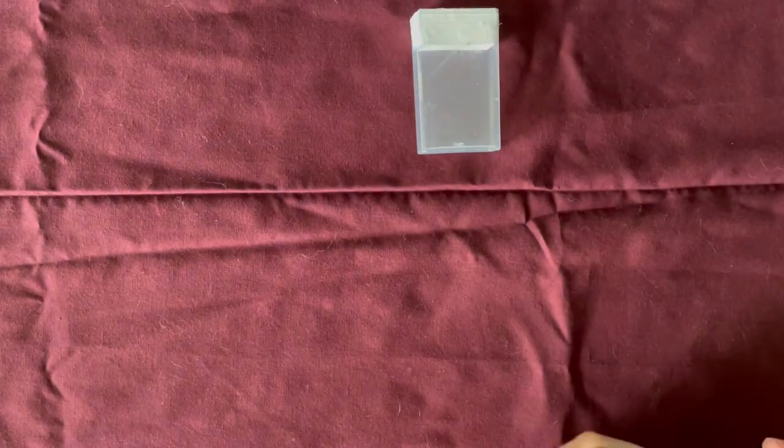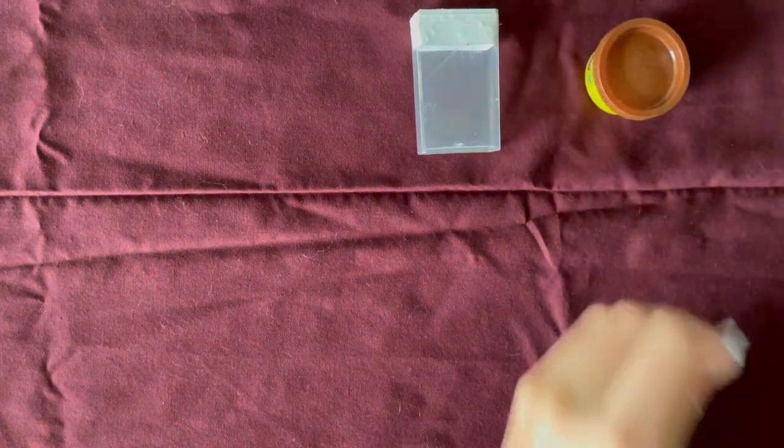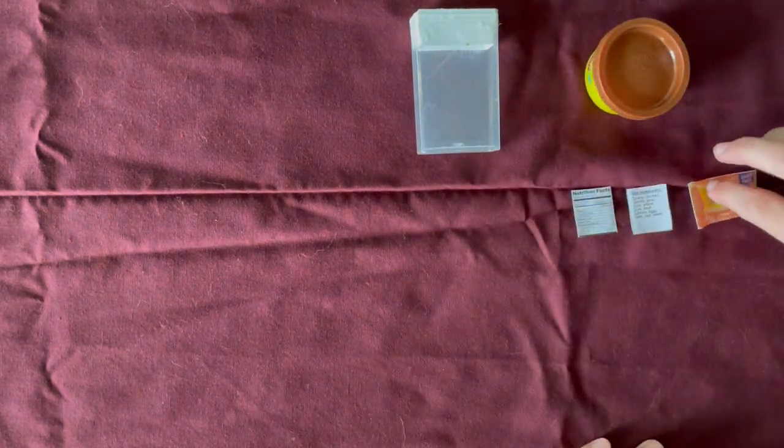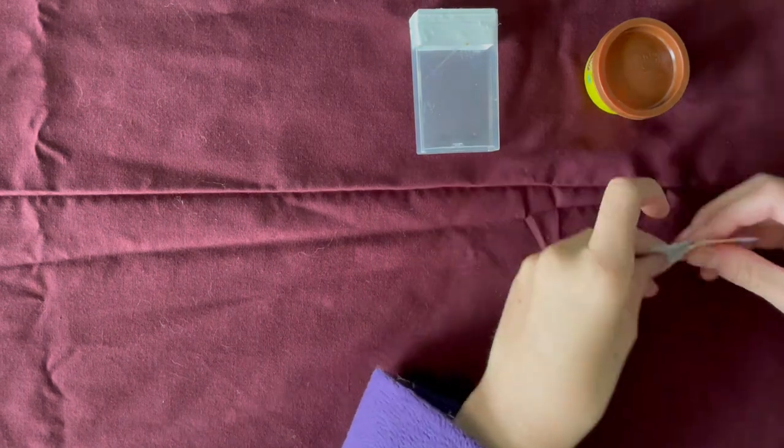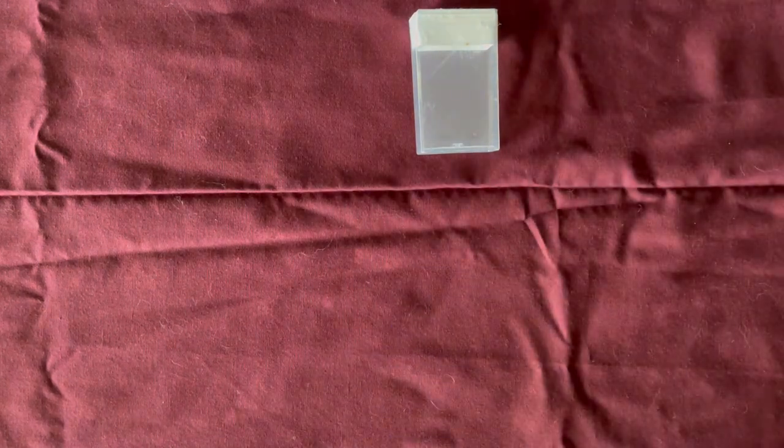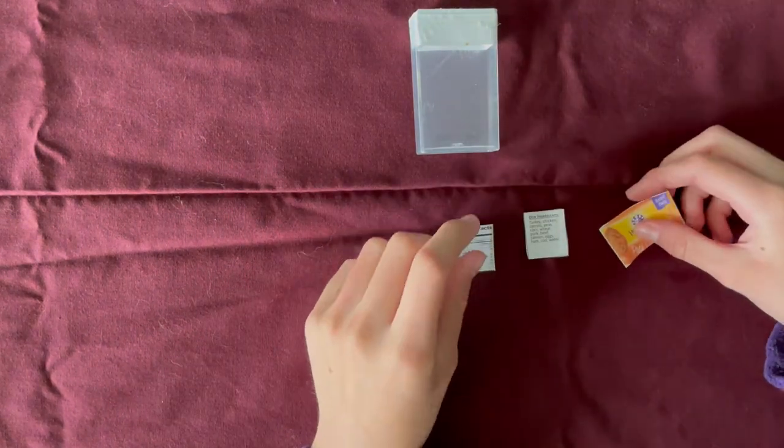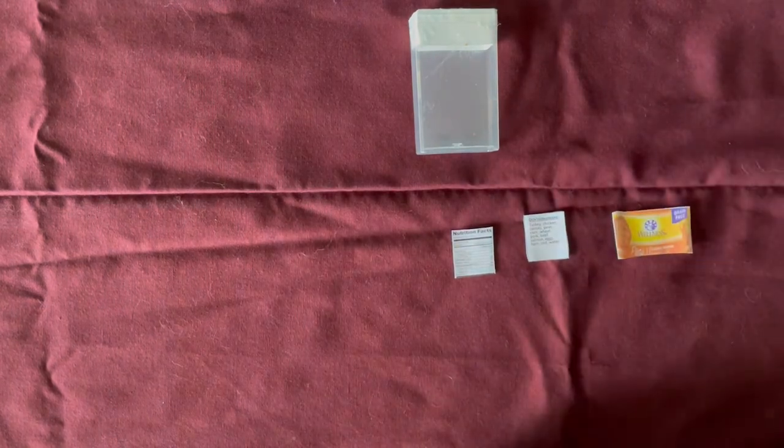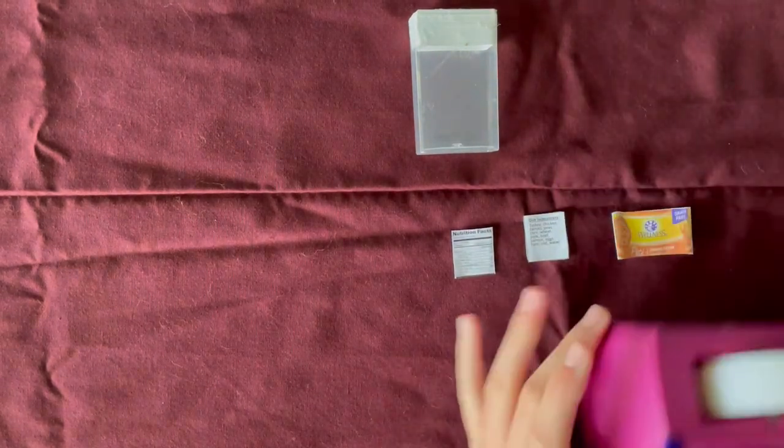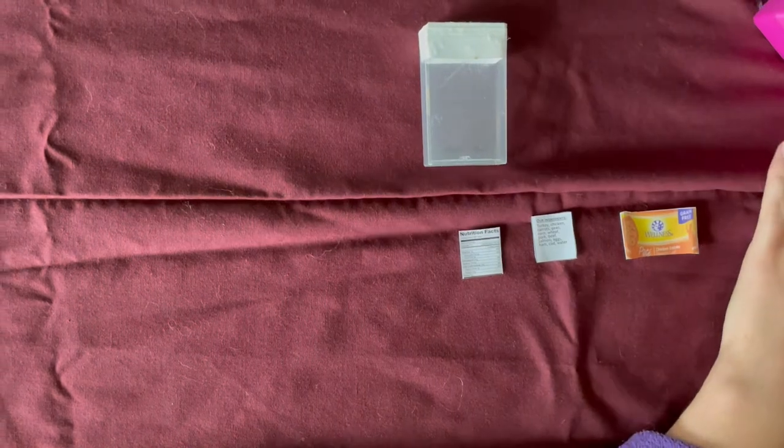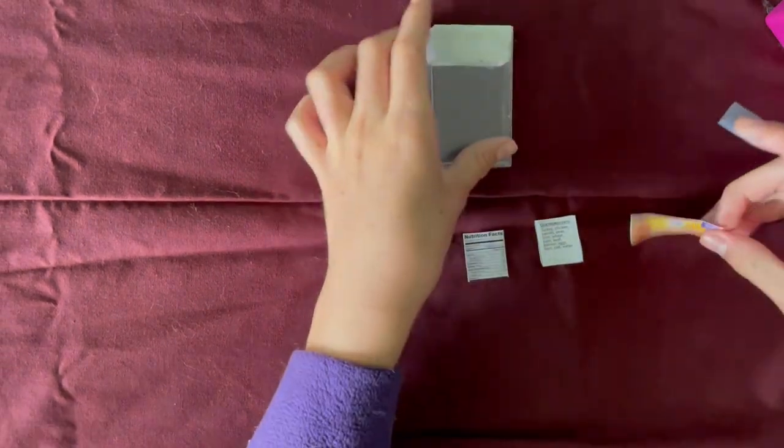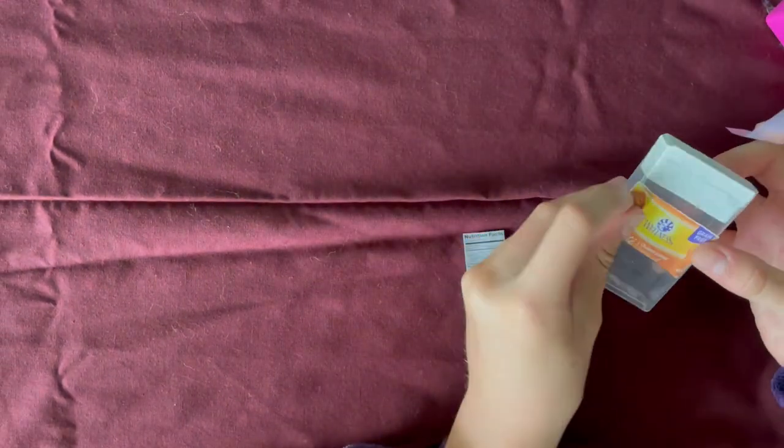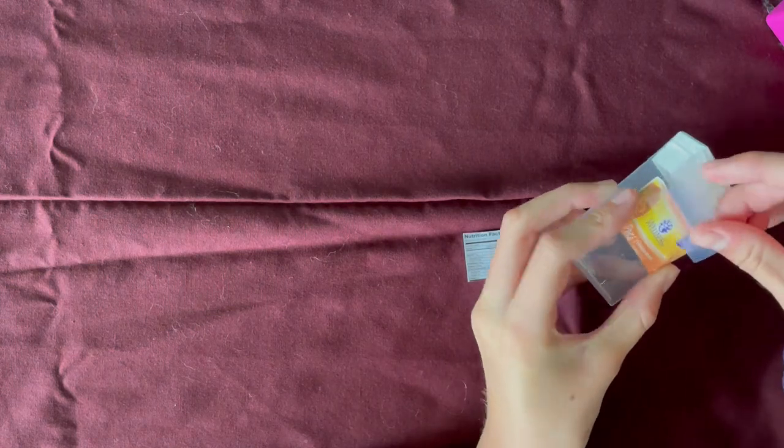For the next craft you are going to need a tic-tac box, play-doh, and a couple labels you have printed off. First we are going to start with the tic-tac box and the labels. Also you will need tape. First you are going to apply the labels onto the box.